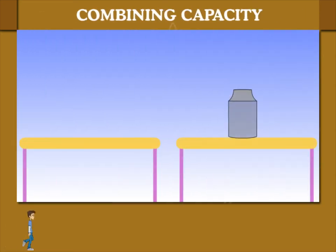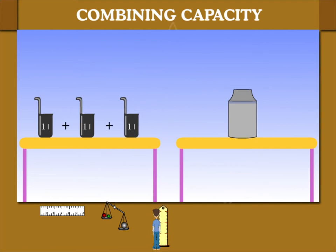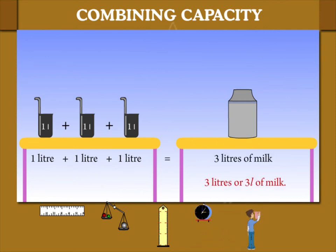Combining capacity. A 1 litre measure fills a can. Another 1 litre is added and then another till the can is filled. So the capacity of the can: 1 litre plus 1 litre plus 1 litre is equal to 3 litres.